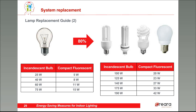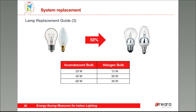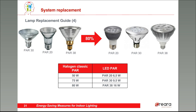From an incandescent lamp to a compact fluorescent, the savings are also huge — we can achieve 80% savings. From an incandescent lamp to a halogen bulb, the savings are also significant at 50%, and we maintain the quality because halogen is also an incandescent technology, so we can maintain the quality of light. These halogen lamps can also be replaced by LEDs, saving 80% of energy consumption. Looking at the table, we have 50 watts against 6.5 watts, or 75 watts against 9.5 watts — that's 80% savings.